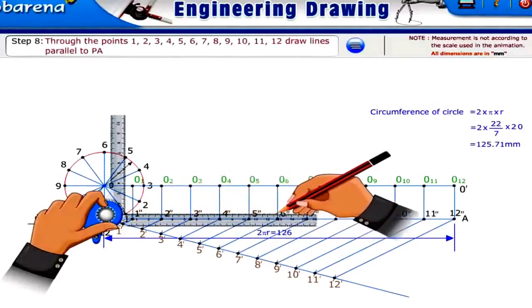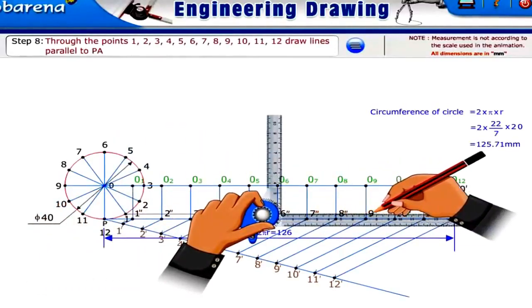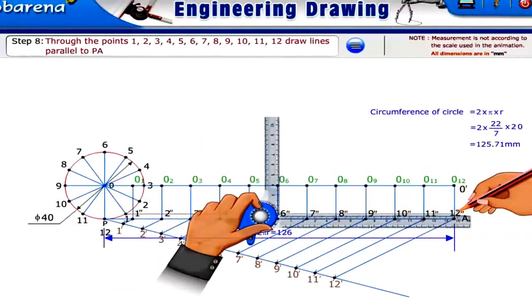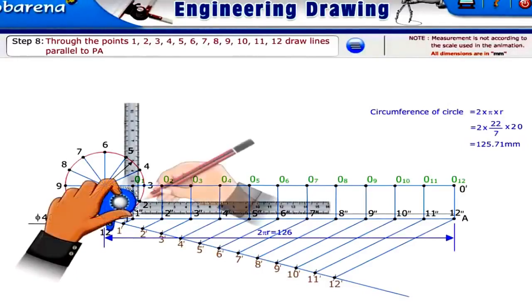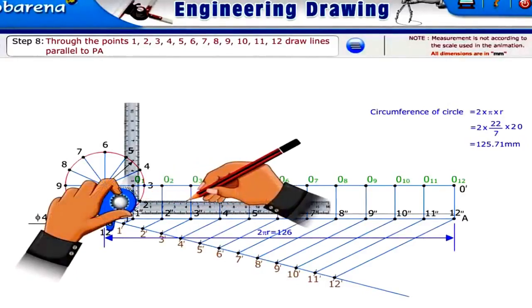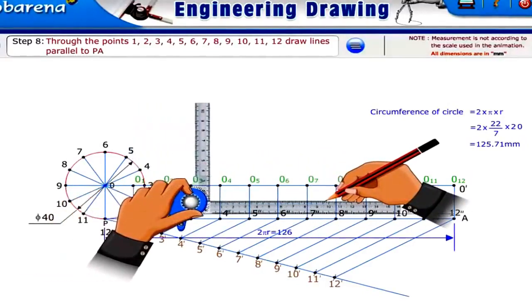Through the points 1, 2, 3, 4, 5, 6, 7, 8, 9, 10, 11, 12, draw lines parallel to PA.